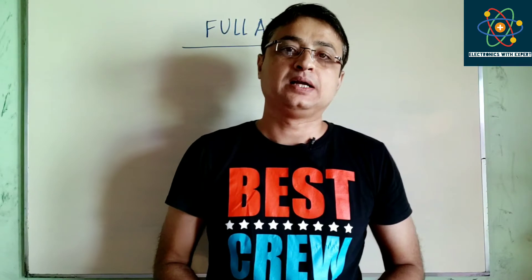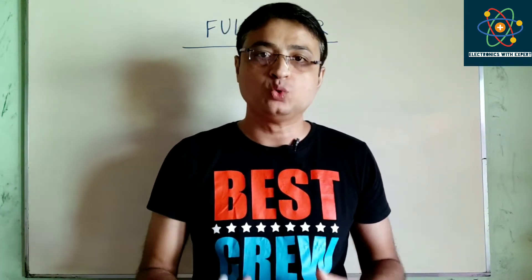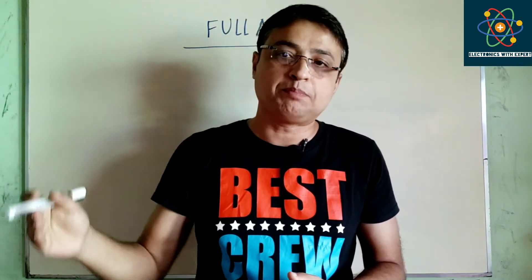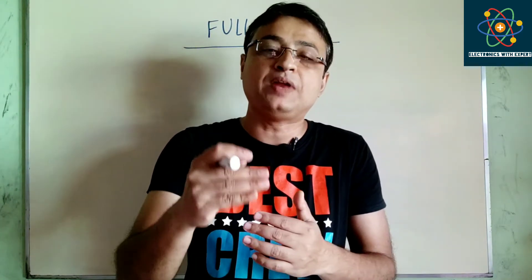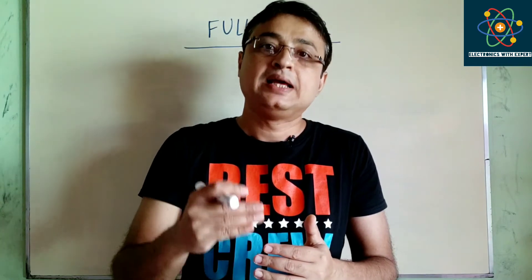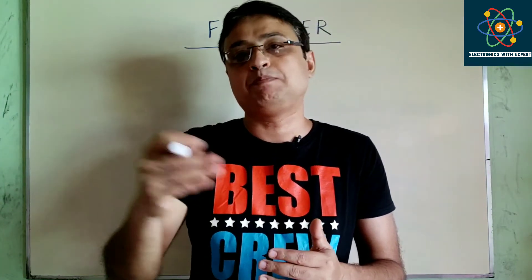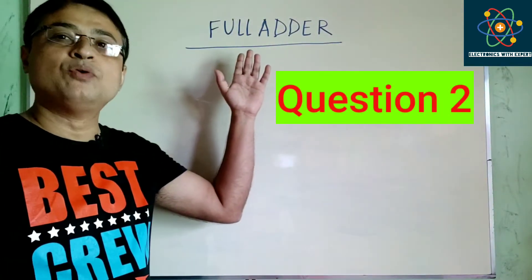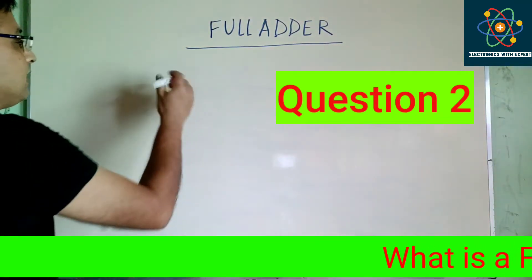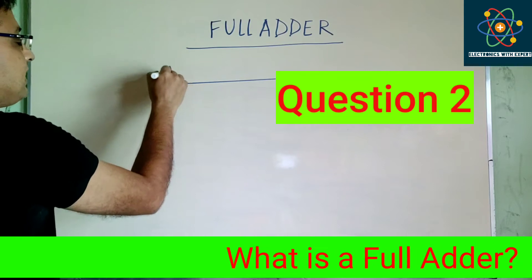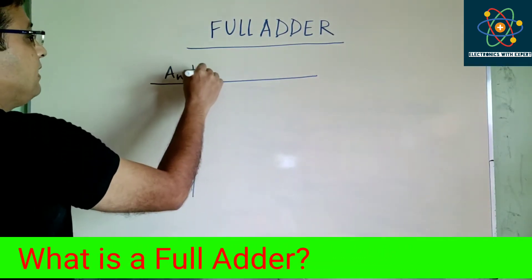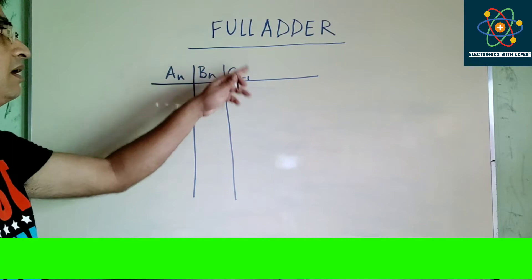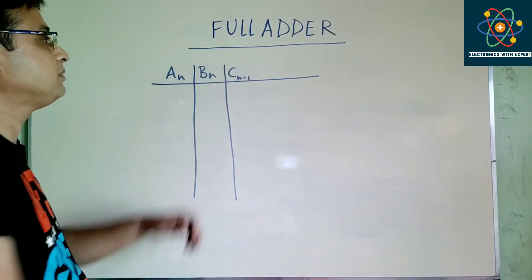In the half adder circuit, you can add only two binary numbers at once. But if a carry is generated from a previous stage and you have to add three bits at a time — that is A, B, and a carry from the previous state — the half adder can't do this. That is why we consider the full adder circuit, which can add three bits at a time: AN, BN, and CN−1 (the carry from the previous state).